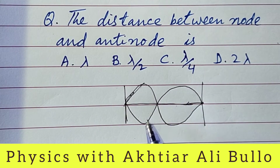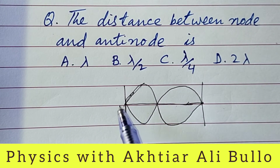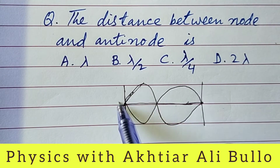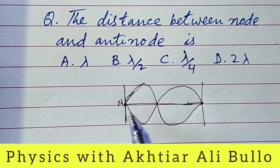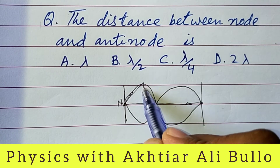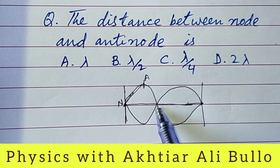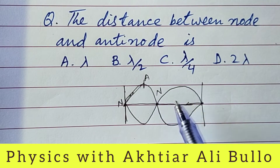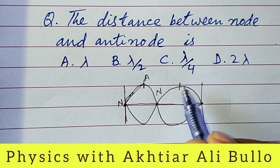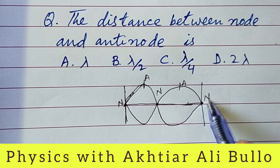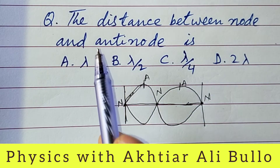In standing waves, loops are formed along with nodes and antinodes. The points marked are nodes and antinodes alternately — this point is a node, this point is an antinode, this point is a node, this point is an antinode, and this point is a node.